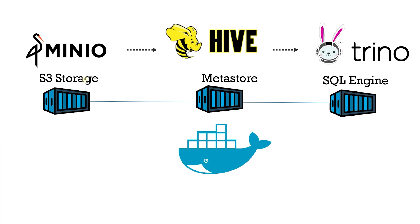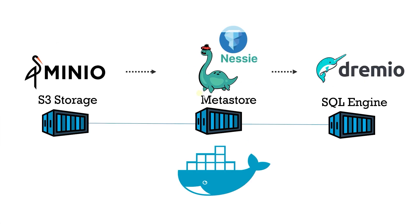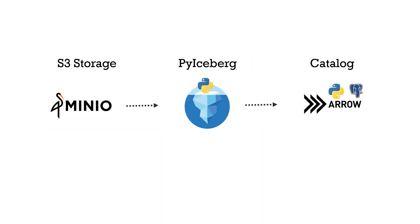Previously we covered data lake setup with tools like MinIO, Hive Metastore, Trino Query Engine, and Nessie and Dremio. Hive Metastore and Nessie catalog are essential, yet they can be complex to configure. I would recommend these catalogs if you are dealing with large-scale data. Today we look at a Python-based implementation of a data lake setup without these catalogs, which simplifies the setup and tools and is adequate for a small setup.